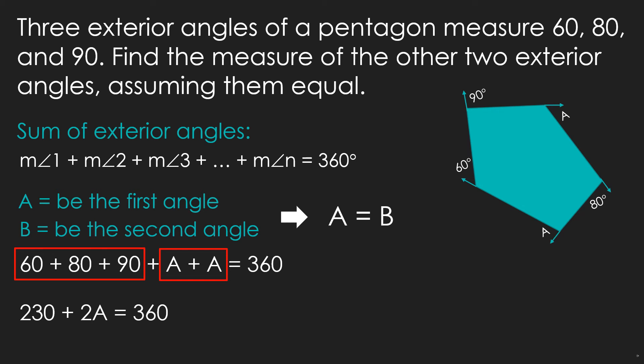The next step is to eliminate 230 on the left side of the equation, because take note, we want to solve what is A. By eliminating, we will minus 230 on the left side, and minus 230 as well on the right side. We are doing this to maintain equality. What we do on the left side should also be done on the right side. By deducting 230 on both sides, the left side will now have 2A, and the right side will have 130. So, the equation now becomes 2A equals to 130. Then, we divide 2 on both sides to get the value of A, and by simplifying, A is 65. Therefore, the unknown two exterior angles of the same measure are both 65 degrees.